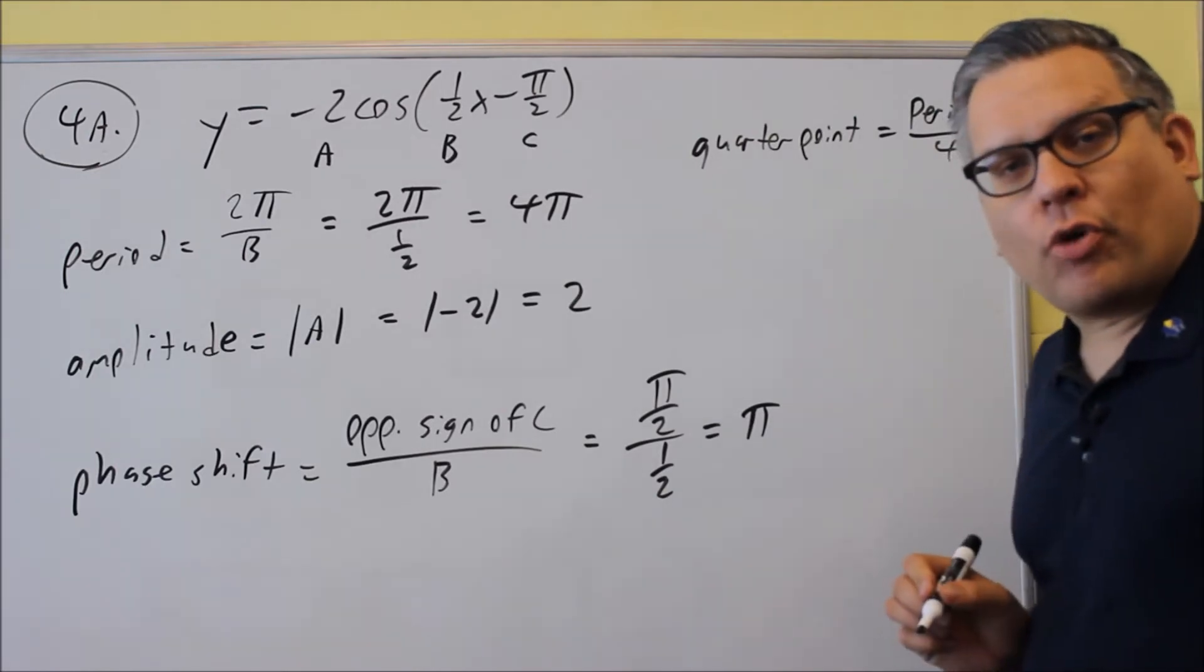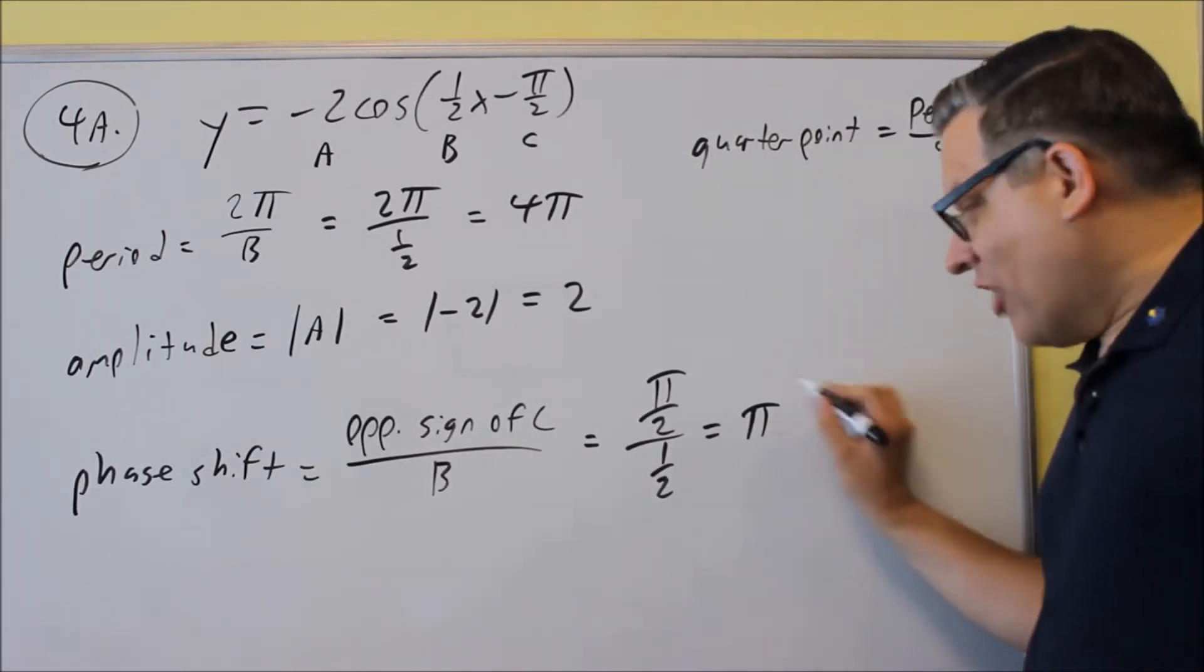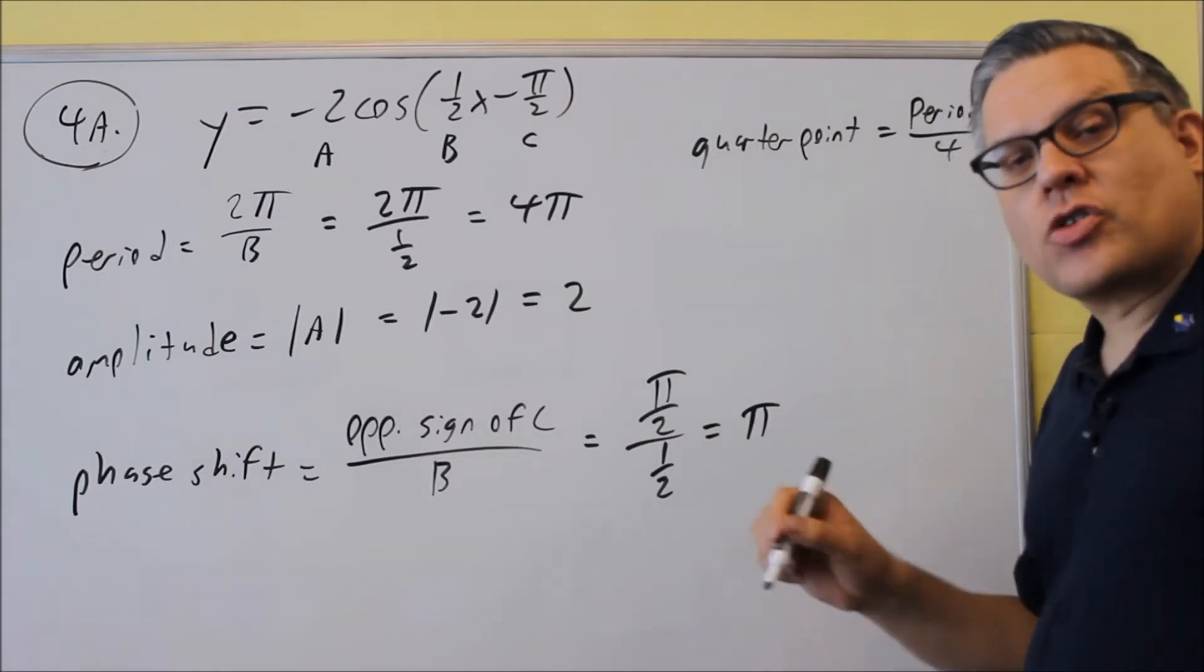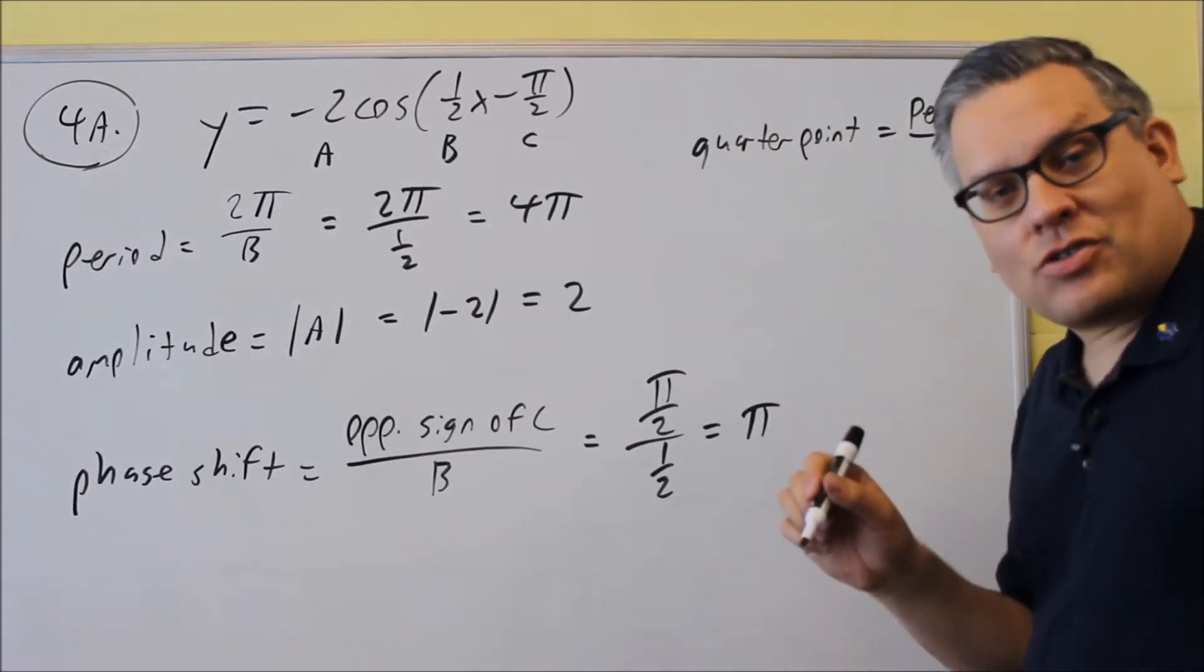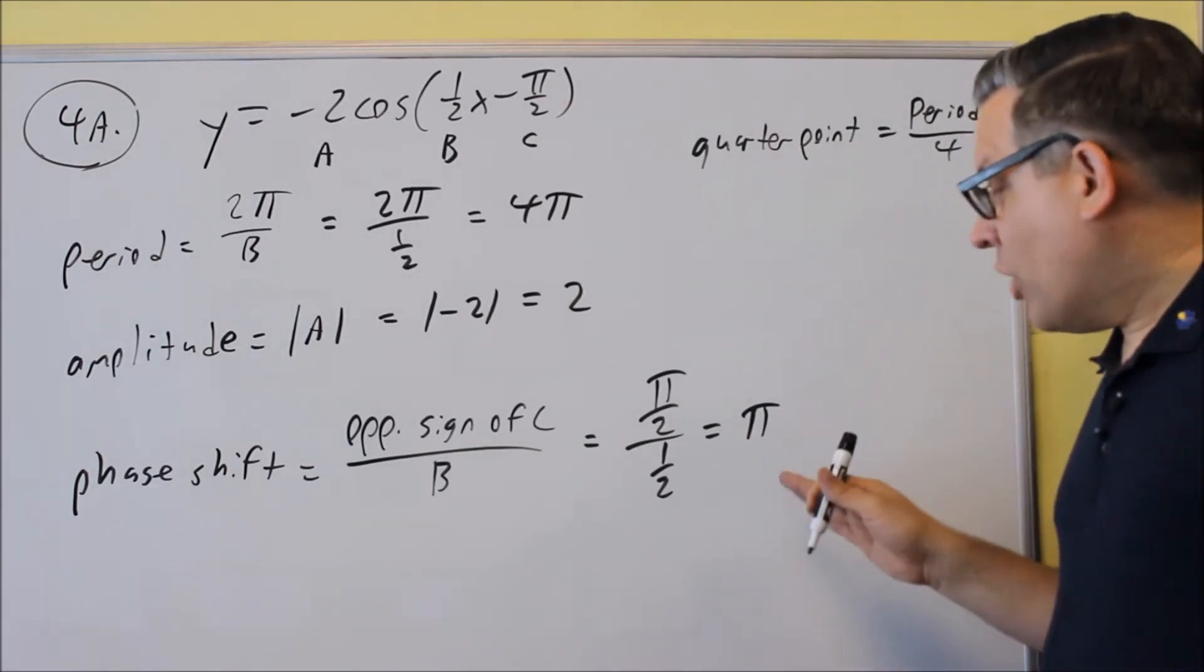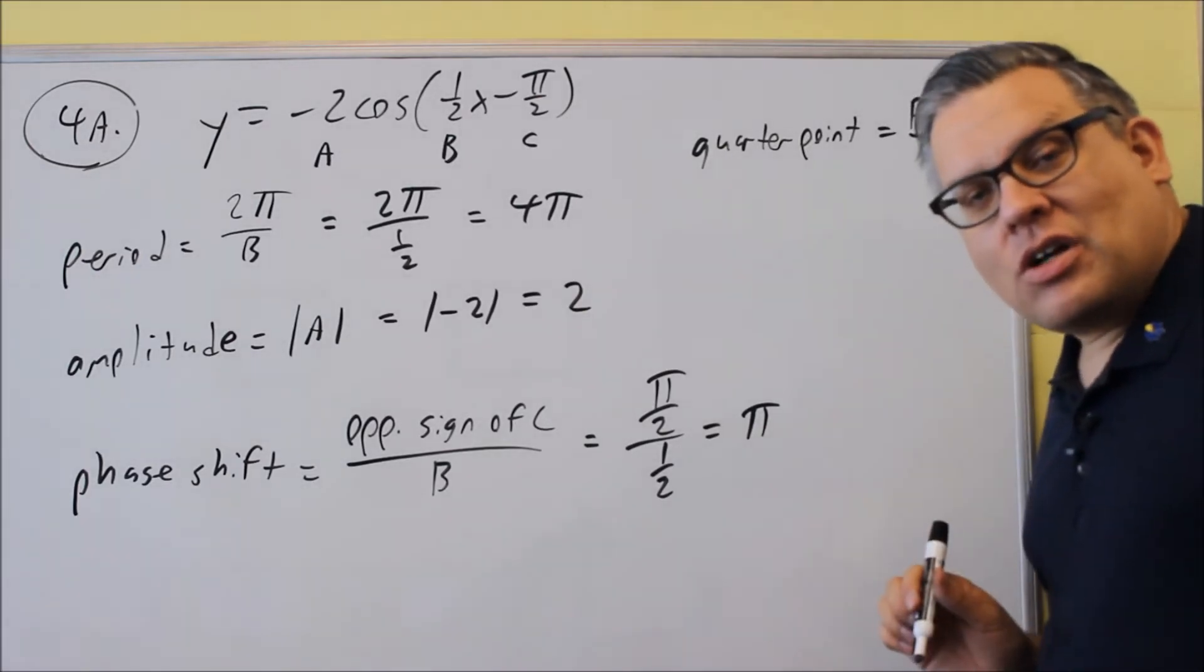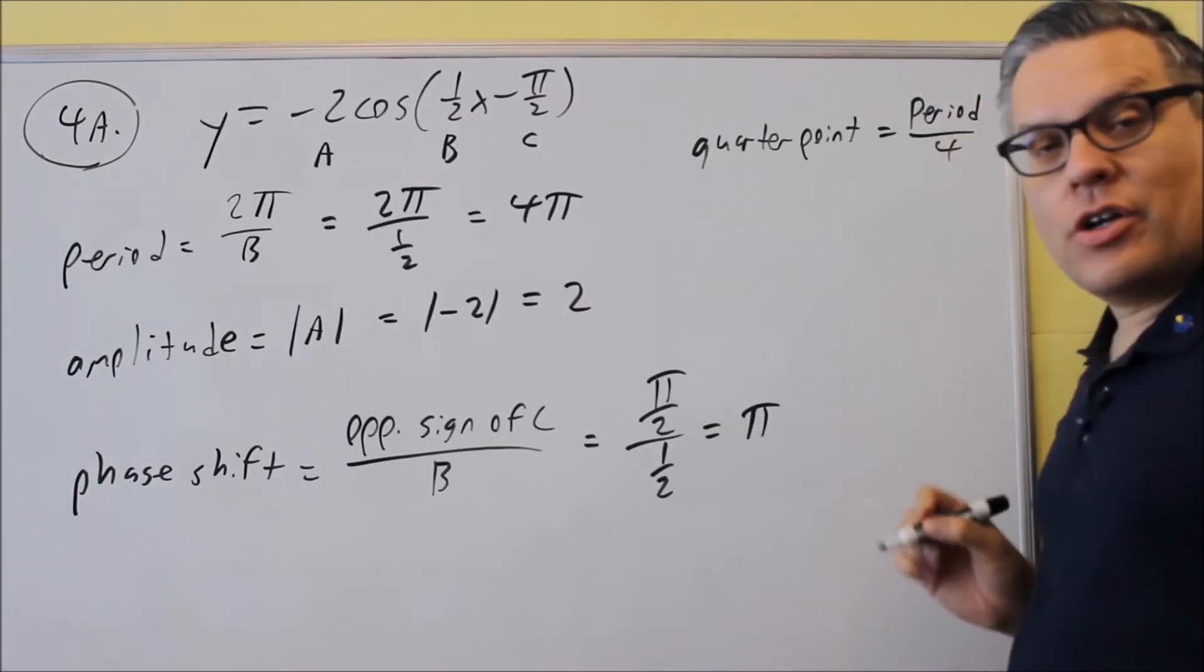Now, the reason why you want to know the quarter point is because when you draw the graph, the phase shift is always going to be your first key point. That's your one key point that you have, but in order to find all the other ones, we have to find out how much we have to add to each one to get to the next key point, and that's going to be this right here, quarter point.